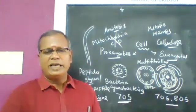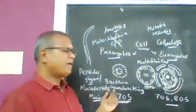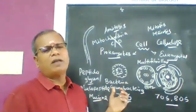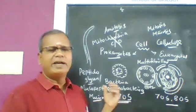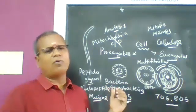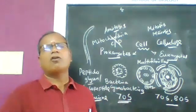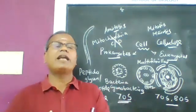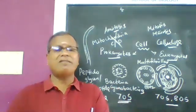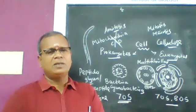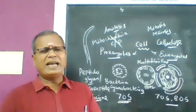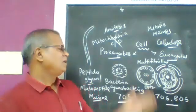There are also pigments: prokaryotes have bacteriochlorophyll and bacterioviridine, while eukaryotes have normal chlorophyll, carotenoids, and biliproteins.